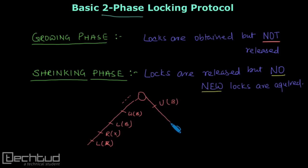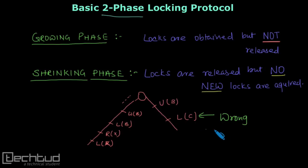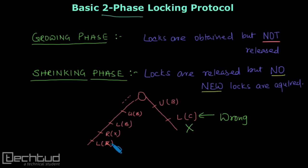...then in this phase I cannot lock any further data items. I cannot take any new lock. So if I try to lock data item C, that would be terribly wrong — we cannot acquire a new lock. Similarly, in the growing phase, we cannot release any lock even if it is no longer required. And once we start unlocking in the shrinking phase, we cannot lock any further item.